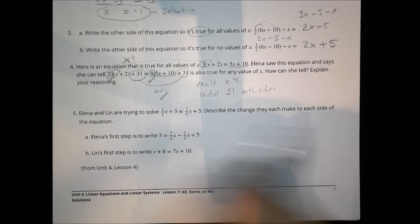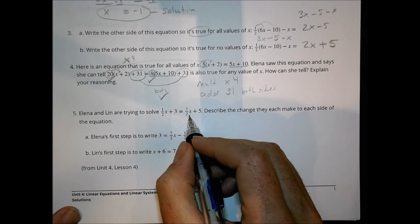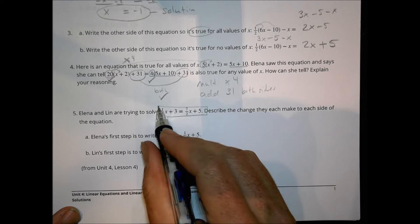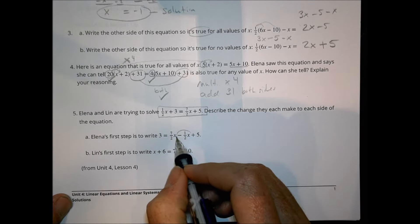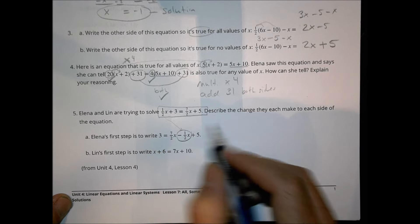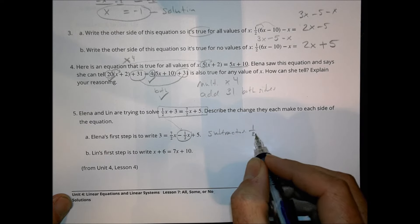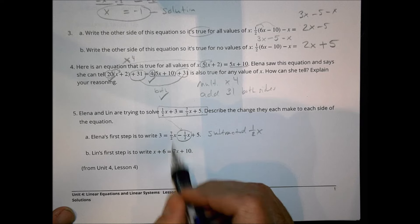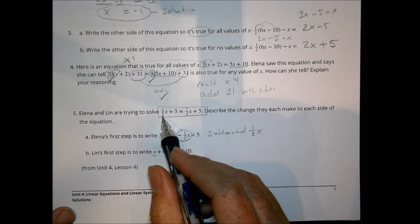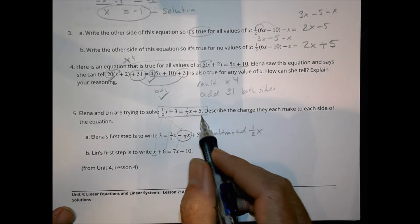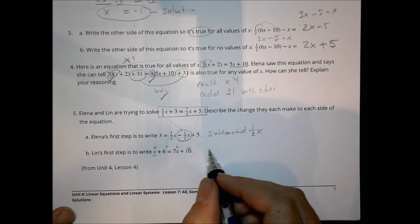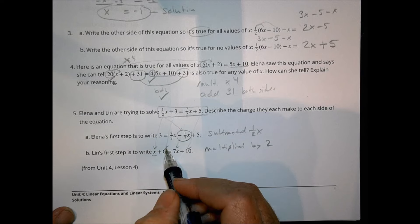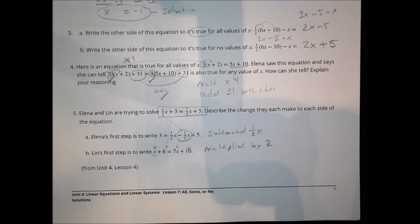Number 5: Elena and Lynn are trying to solve one half x plus 3 equals seven halves x plus 5. Describe the change each made to each side of the equation. For Elena's first step, we can see she has taken the one half x from the left side and subtracted it over to the right — she subtracted one half x from both sides. For Lynn, everything seems to have changed: the x is different, the 3 is doubled, the 7 is now a whole number, and the 5 is doubled. She multiplied everything by 2, which makes the fraction go away, gives 2 times 3 equals 6, 2 times 5 equals 10, and makes that just 7.